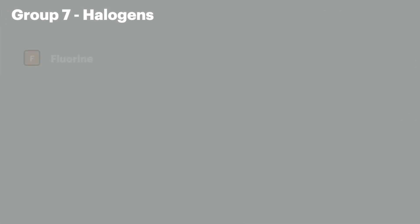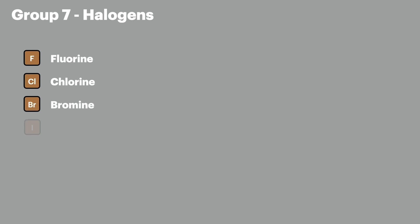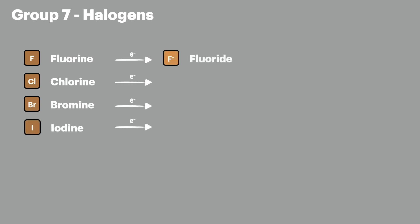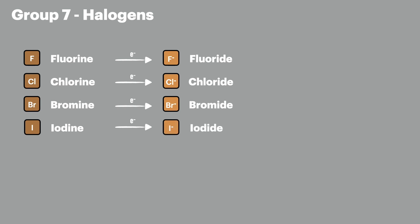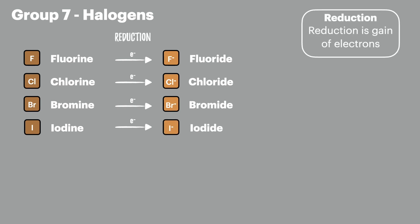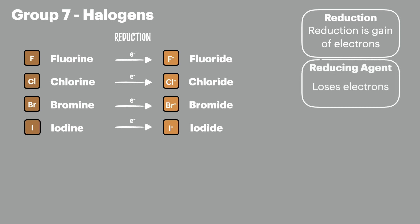Before we go into the reactions of the sulfuric acid, let's just cover the formation of the halide ions. The halogens all gain a single electron to form the halide ions in a process that we know as reduction. Reduction is the name we give to a process where a species gains an electron, and a reducing agent loses electrons so another species can be reduced.